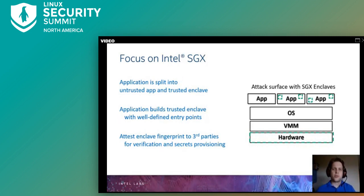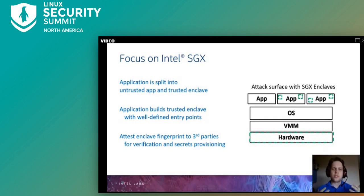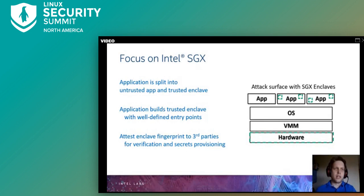After the split, the hardware ensures that neither the untrusted component of the application nor any of the system software can access the trusted enclave's memory. In the SGX model, an untrusted application builds the trusted enclave given its initial state, including some well-defined entry points. Before provisioning secrets to such an enclave, a third party verifies attestation evidence produced by the hardware — typically including the memory fingerprint as well as the defined entry points — which allows the third party to trust the enclave and ship private keys, for example.